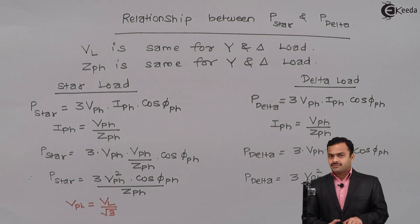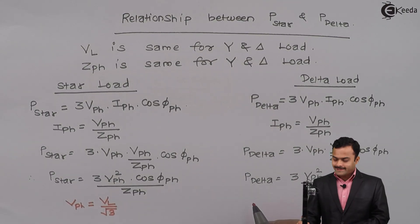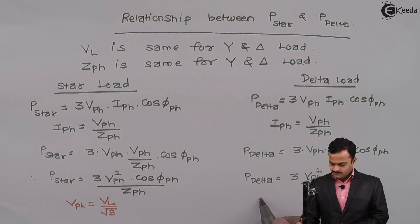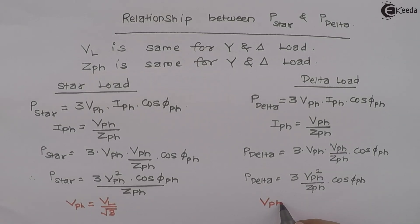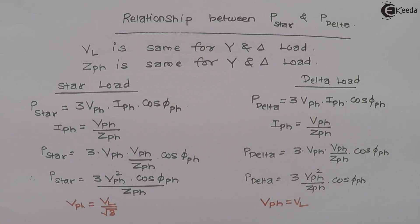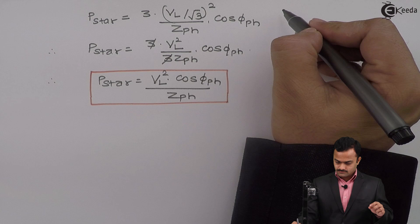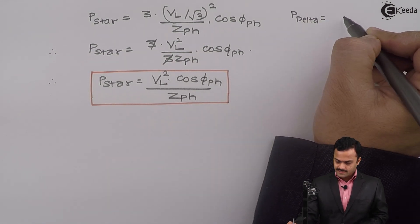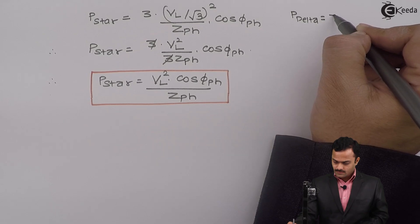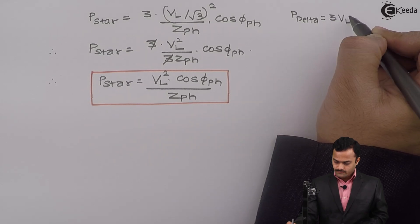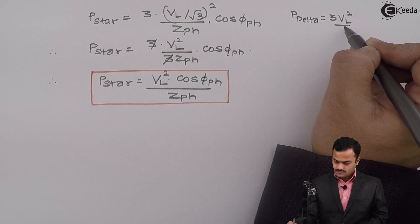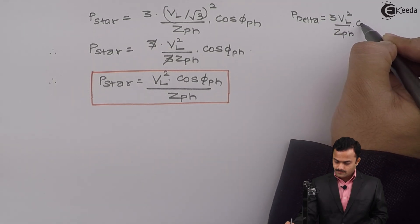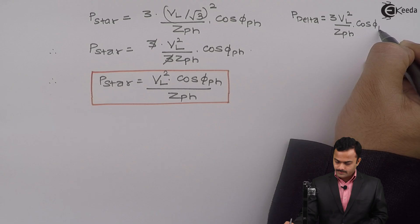Now comes the difference. In delta, phase voltage is same as line voltage. So if I substitute, what I will get? P delta as 3 VL square upon ZPH multiplied by cos phi PH.